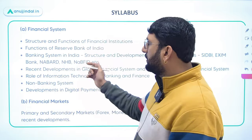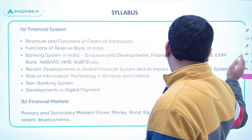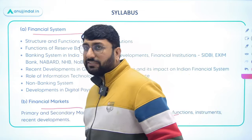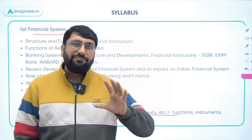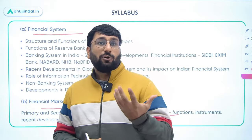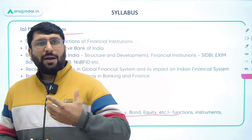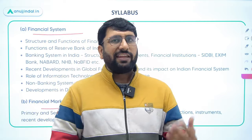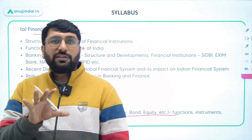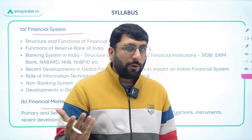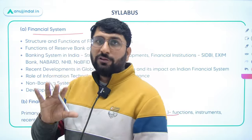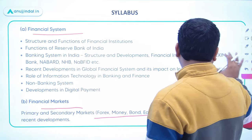The broad syllabus has a first segment on the financial system covering topics from the Indian financial system, financial markets, primary and secondary markets, and so forth. While going through the syllabus, also try to identify which topics require some current affairs knowledge. For example, while studying the banking system, repo rate changes and reverse repo rate changes keep coming, so these are important from an exam point of view. Similarly, some chapters are purely static, such as corporate governance and banking, where committee guidelines and recommendations remain largely the same.